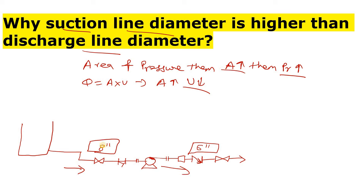Our question is: why is there an eight-inch suction line diameter and a six-inch discharge line diameter? What is the main reason? The reason is very simple. On the suction side of a centrifugal pump, there is an impeller and casing. What happens is that sometimes cavitation occurs.